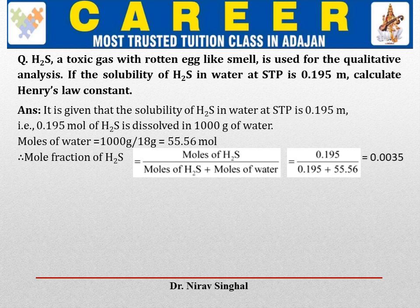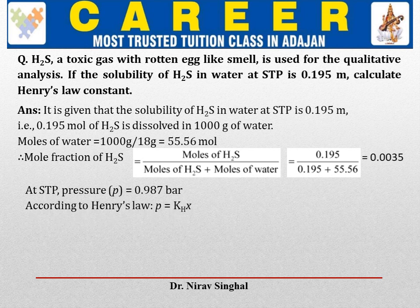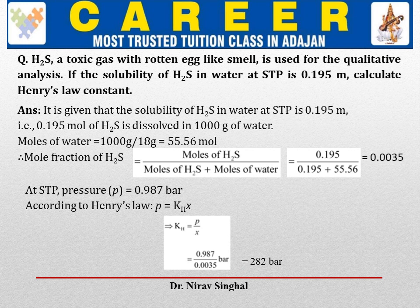STP means standard temperature and pressure. Here we consider 1 bar, or to be precise 0.987 bar, as the pressure. So P = 0.987 bar. According to Henry's law, P = KH × X, so KH = P / X. KH = 0.987 divided by 0.0035, and the answer is 282 bar. The key steps: convert molality into mole fraction first, then at STP apply pressure as 0.987 bar, and apply Henry's law equation.